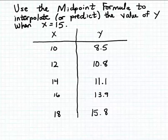In this example, we're given a table of data pairs of related x and y values. These data pairs are arranged in rows. What we want to do is use the midpoint formula to interpolate or predict the value of y when x is 15.